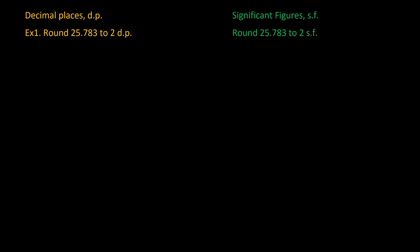For decimal places, we're being asked to round the number 25.783 to two decimal places. The first thing we need to do is put a line that indicates where the end of those two decimal places are. When it's decimal places, we count from the decimal point to work out where to put that line. We went two places from the decimal point and that's where we draw the line in.